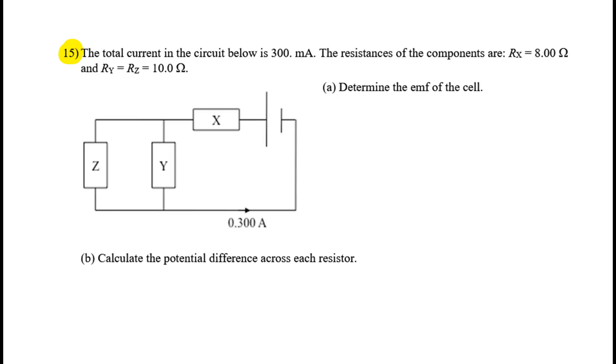Okay, some more circuit problems. We know that the current, the total current, so the current exiting the cell before it splits up, is 300 milliamps. Milli is 10 to the minus 3. The resistances are 8 ohms and 10 ohms apiece for Z and Y.